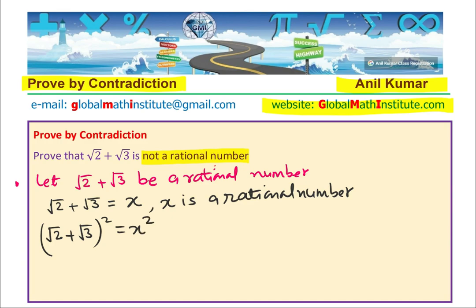Square root 2 plus square root 3 whole square will be x square. Expanding the left side, we get a square plus b square plus 2ab, right? So it is 2 plus 2 times square root 2, square root 3 plus square root 3 square will be 3. Equals to x square.